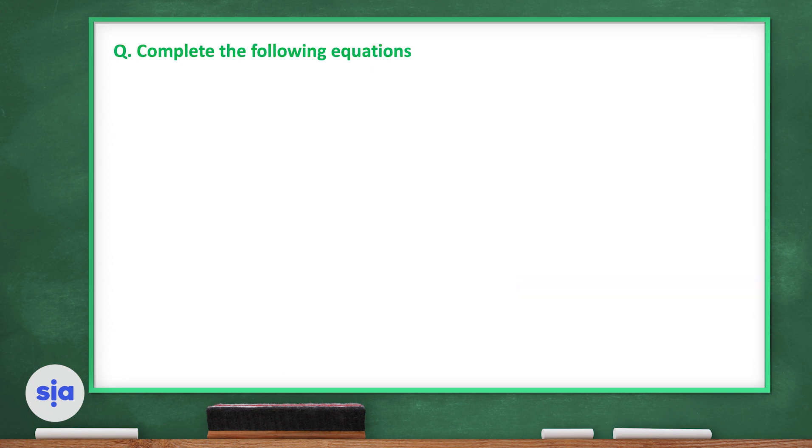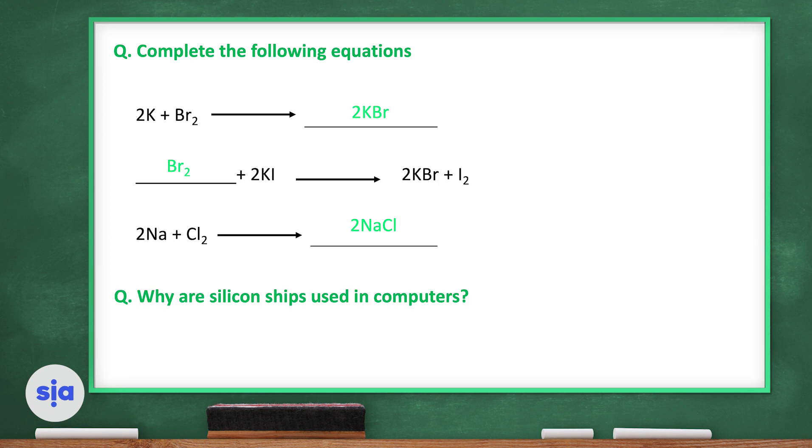Now it's time for questions. Complete the following equation. 2 potassium plus bromine? Yes, it will give potassium bromide. What with potassium iodide will give potassium bromide and leave the iodine alone? The bromine. We said before that the bromine will replace the iodine in its salt solution. This is too easy. Sodium plus chlorine will give sodium chloride or table salt. Why are silicon chips used in computers? Yes, because it is a semiconductor. Its conductivity depends on the temperature.